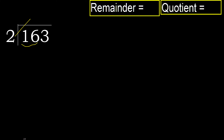2 multiplied by which number is nearest to 16 but not greater? 2 multiplied by 9 is 18, which is greater. Multiply by 8: 16 is not greater. 16 minus 16 equals 0.